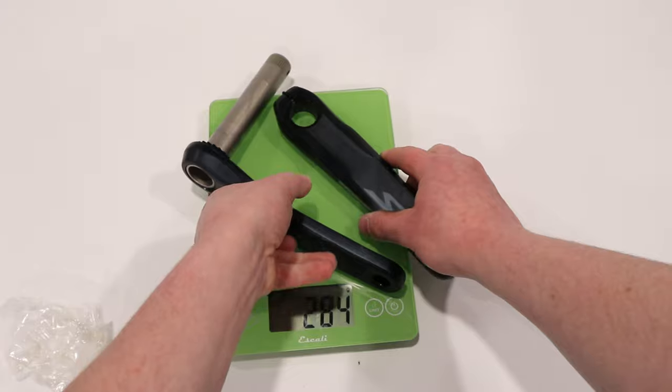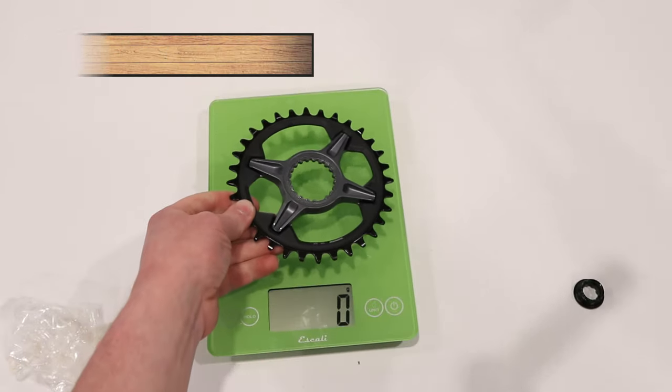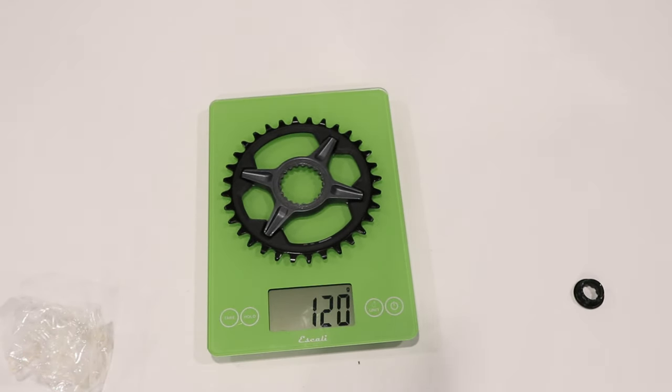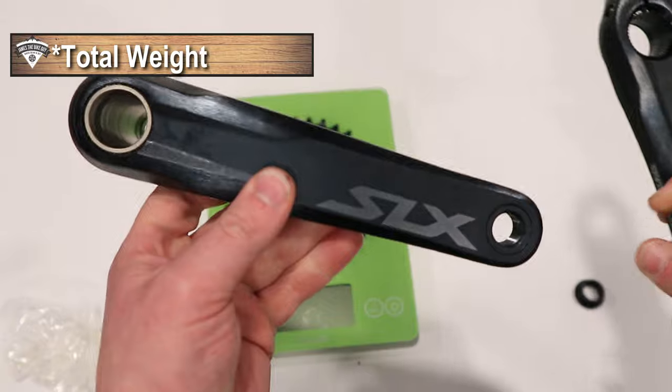So the actual weight of the crank arms comes in at 506 grams. And then your chainring in a 32-tooth comes in at 122, making for a 626-gram crankset.